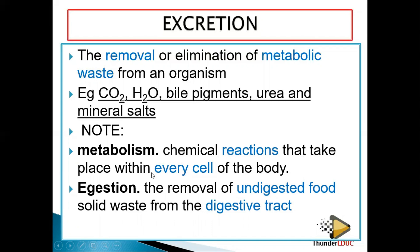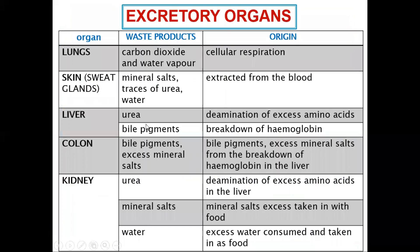There is a major difference between metabolic wastes and digestive wastes. Egestion is the removal of undigested food and solid wastes from the digestive tract. People often confuse excretion and egestion: egestion is removal of undigested material from the digestive system, while excretion is the removal of metabolic wastes from the body. Excretory organs include the lungs, skin, liver, colon, and kidney.